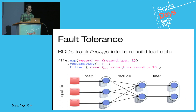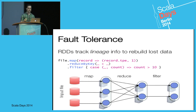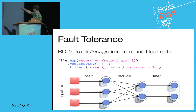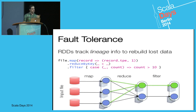Spark tracks lineage for fault tolerance. Here's another example: say we count the number of records for a given type occurring more than 10 times. If a machine fails and we lose a partition, Spark can actually remember the lineage of how we calculated that final partition. So if we ask for it again, it will recompute just that partition, reusing the rest of the data still available on the cluster.